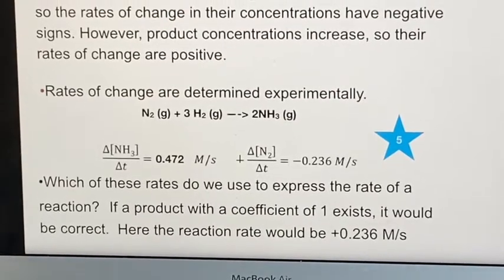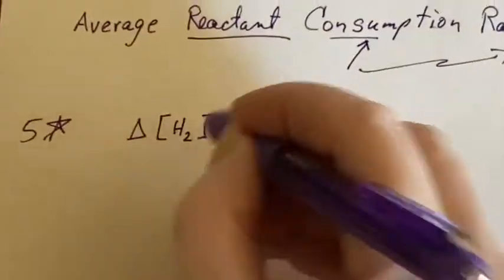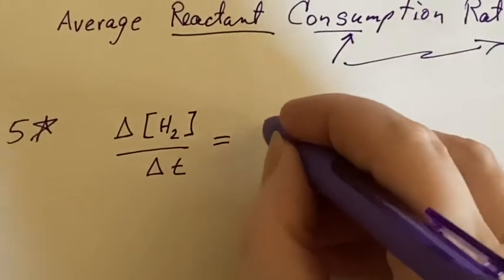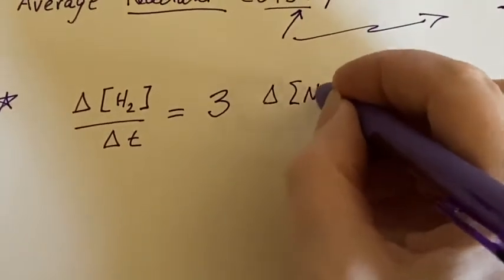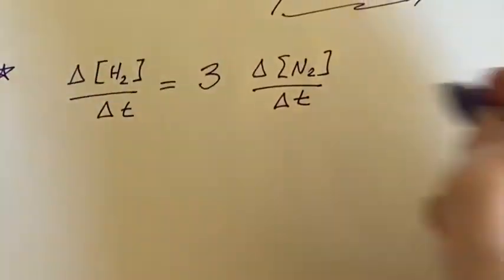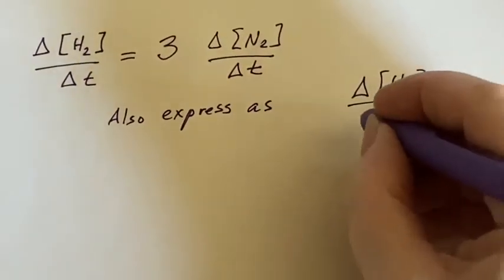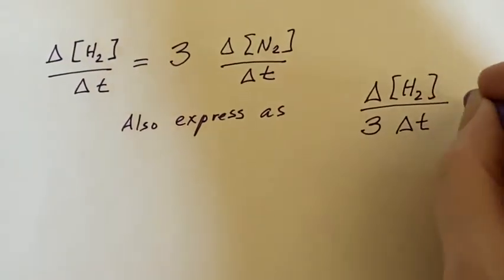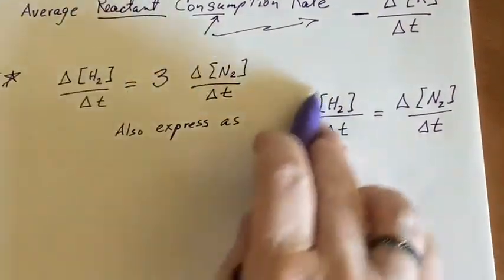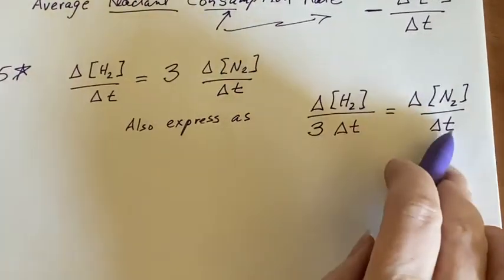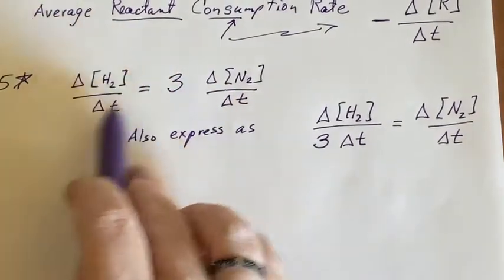Let's talk about the hydrogen. The change in concentration of hydrogen over time should be three times as much as the change of nitrogen in that period of time. We could also express that as Δ[H₂]/(3Δt) equals Δ[N₂]/Δt. This is the way we would commonly originally write it, but this is what we will use. You can see all we've done is change where the three is - it's an algebraic thing.